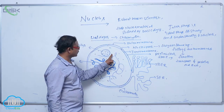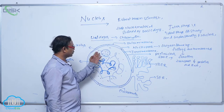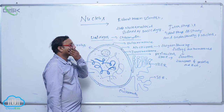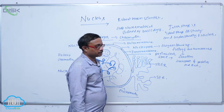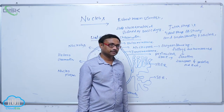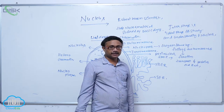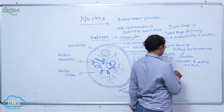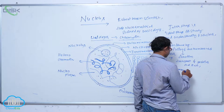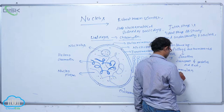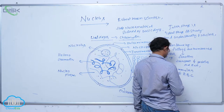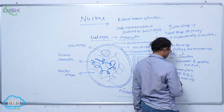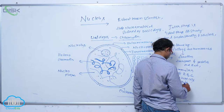Inside the nucleoplasm, chromatin material and nucleolus are present. Generally, each cell has one nucleus — this is a general characteristic of living organisms. But in some cells, the nucleus is absent; for example, mammalian RBCs and sieve tube cells do not have a nucleus. This is called the anucleate condition, meaning absent of nucleus.